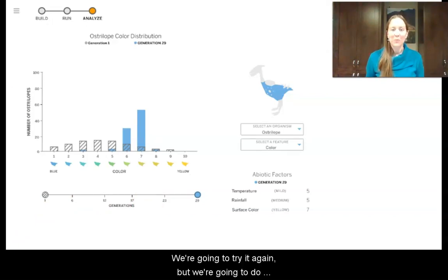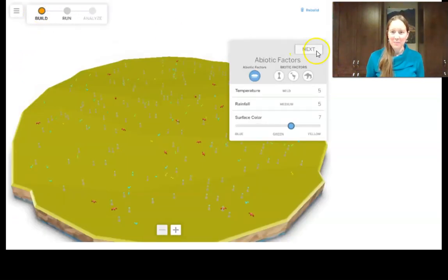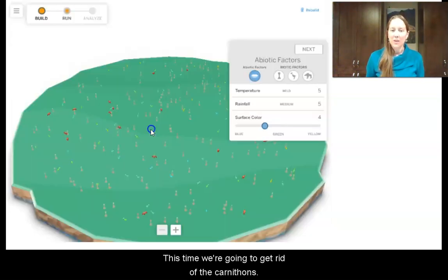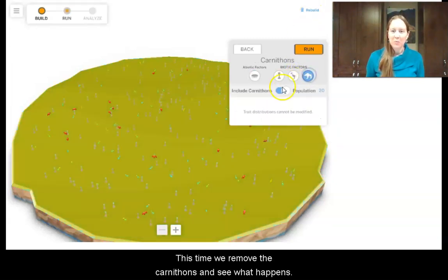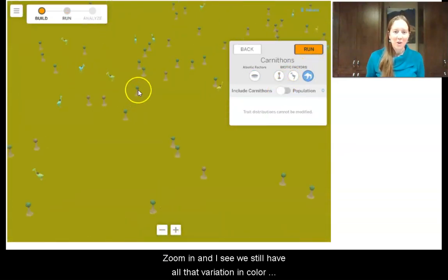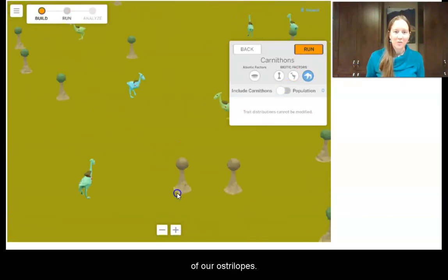We're going to try it again, but we're going to do something a little bit different this time. This time, we're going to get rid of the carnithons. So same setup, we make it yellow number seven. This time, we remove the carnithons and see what happens. I zoom in, and I see we still have all that variation in color of our ostrilopes.